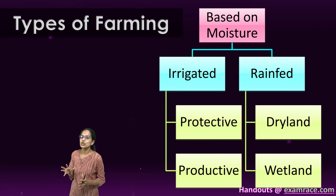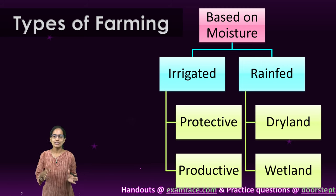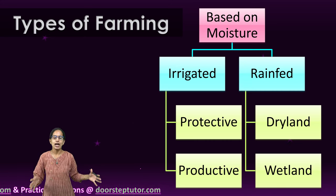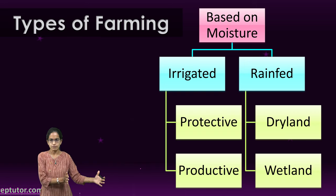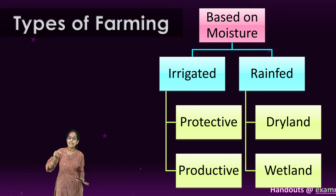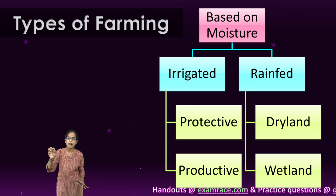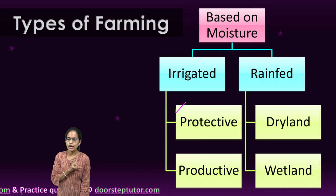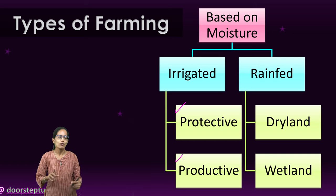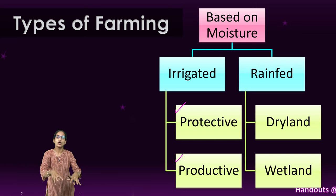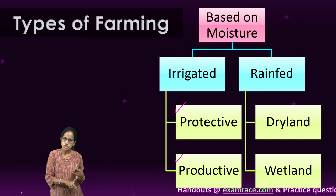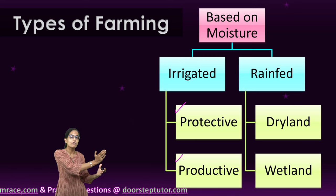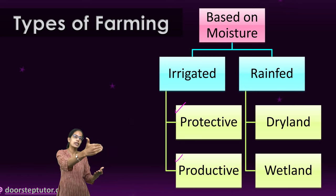Coming to types of farming: based on moisture availability, farming can be either irrigated or rain-fed. India is a monsoon land, so a lot of farming depends on rain. Irrigated land can be further classified into protective and productive. Protective irrigation protects the crop from adverse effects of soil moisture deficiency, acting as a supplementary water source above the rainfall threshold.